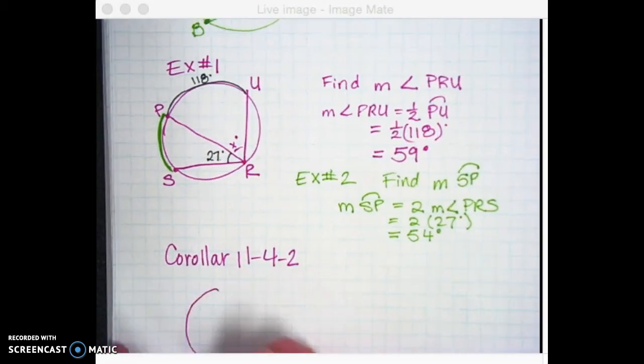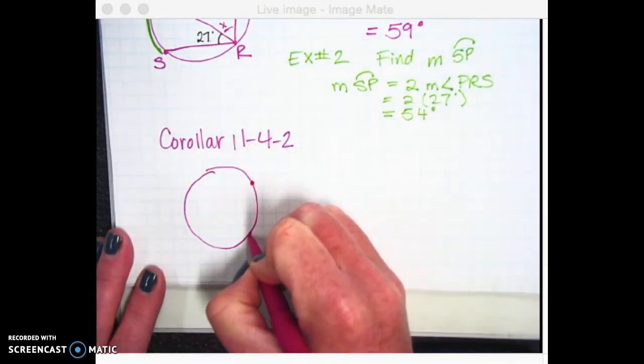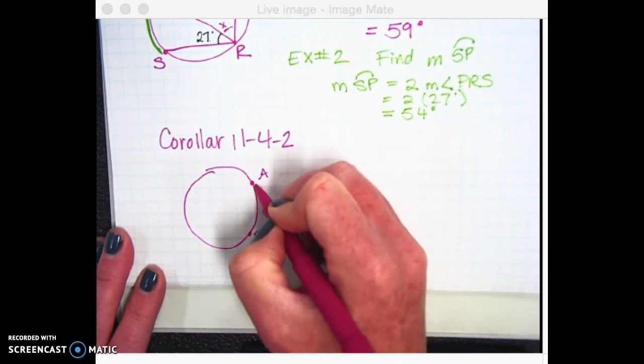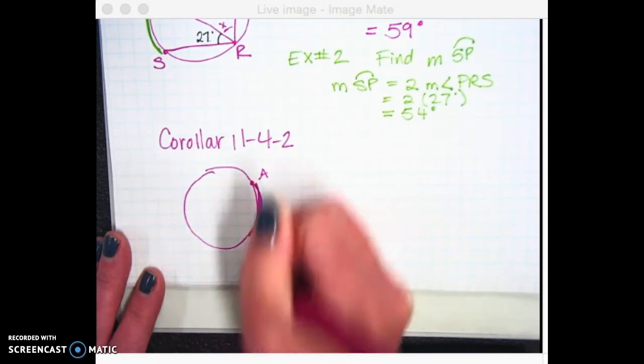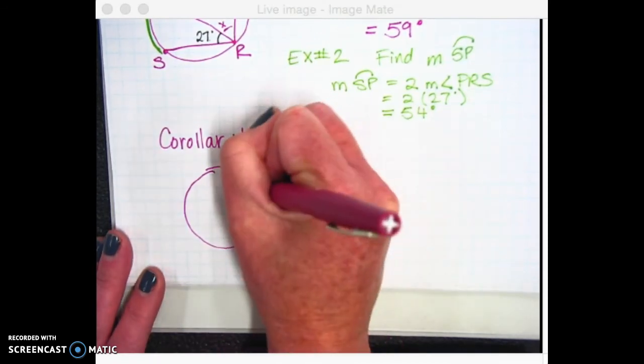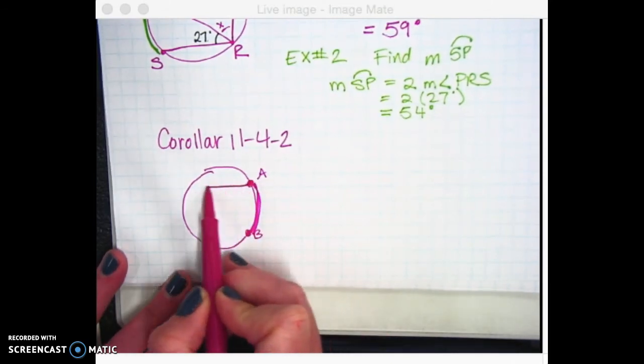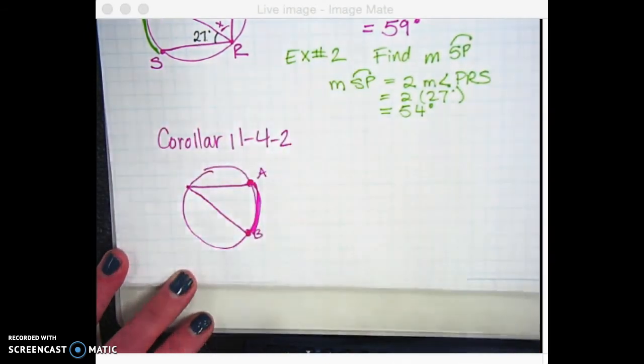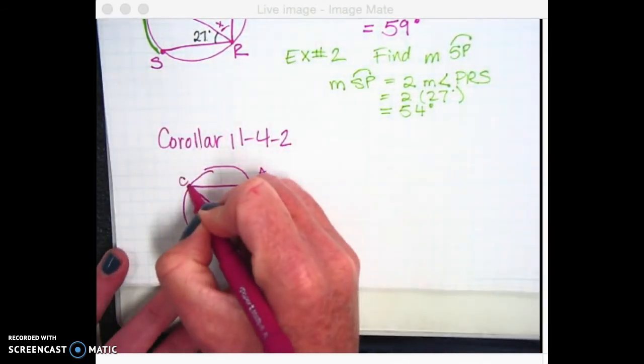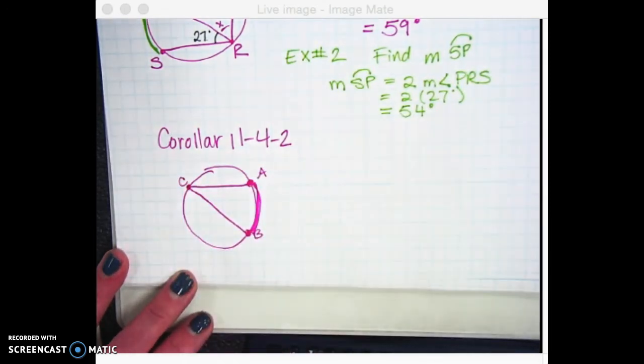It says that if inscribed angles of a circle intercept the same arc, or are subtended by the same chord or arc, then the angles are congruent. So here's what happens. We have this circle. We're going to start with the circle almost every time. And we're going to have arc AB over here. So we have this arc right here. We're going to kind of highlight it, because that's what I want you to focus on for a minute.